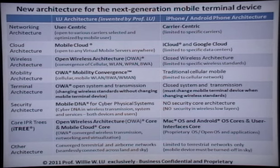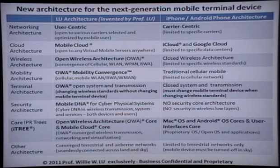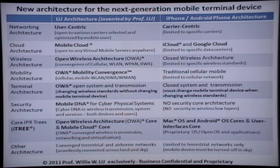The last architecture is very interesting. Using our architecture, based on open wireless architecture and mobile cloud, we can support converged terrestrial and aerial networks. In the future, when you go from land to the sky on an aircraft, we can support seamless connectivity across land to sky. When the mobile phone moves from land to sky, it automatically shuts down the land transceiver and switches to airborne radio transmission technologies, so the user doesn't have to turn off the mobile phone. Right now, smartphones have to be turned off in the sky — that's the last feature.